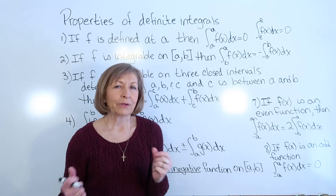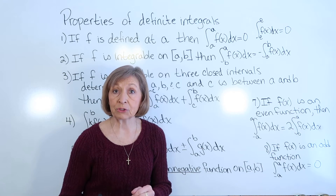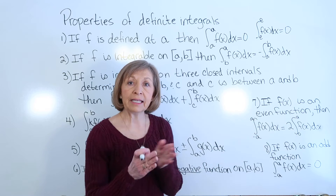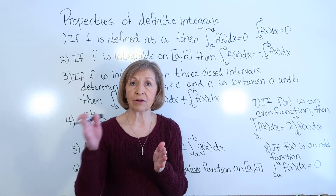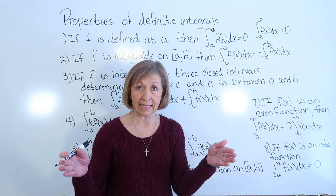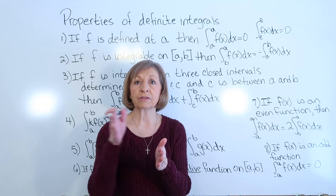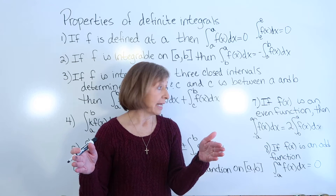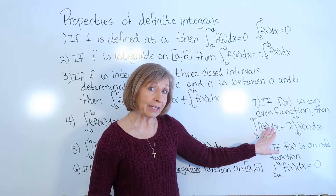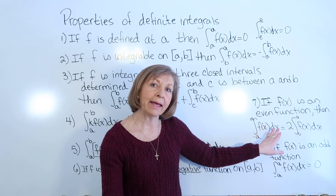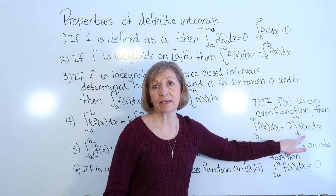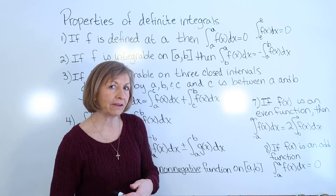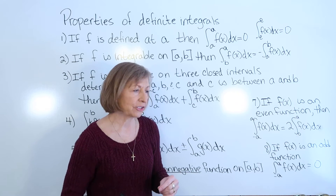Property 7: an even function has symmetry with respect to the y-axis. If you're integrating over an interval from negative a to a and it's an even function, your definite integral value can be found by taking two times the definite integral from zero to a of the function. This often saves messy calculations.